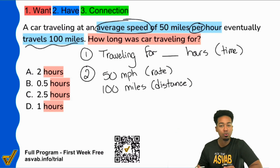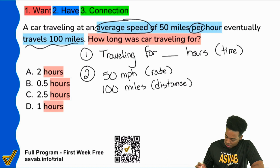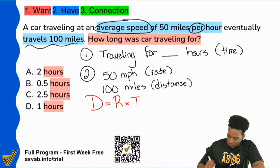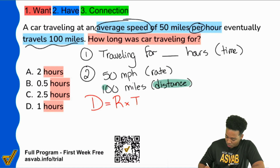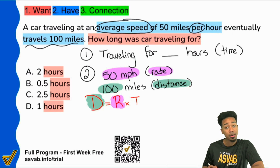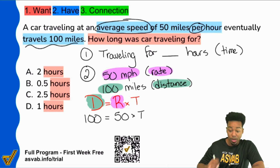I know this problem is super straightforward for some of us, but you've got to be able to talk about it. So here we have the distance equals rate times time formula. We understand that my distance is 100 miles, so I'll plug that right in. Then we have my rate being 50 miles per hour, and I'll plug that in right there. So we'll have 100 miles equals 50 times time. Great.